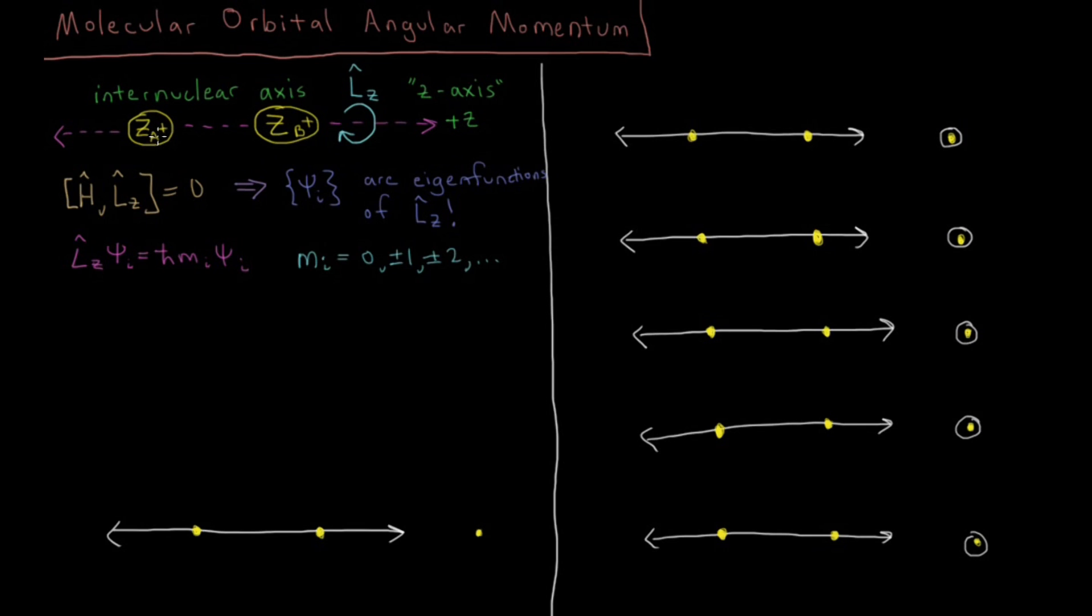We've got two nuclei here in our diatomic molecule: nucleus A and nucleus B. They each have a charge of ZA plus and ZB plus, with ZA and ZB being the integer number of protons they each have in atomic units. These two points are going to be connected by a line, so that's our internuclear axis here. This dotted purple line connects these two nuclei and it's also going to be our Z axis.